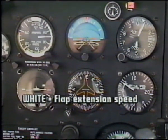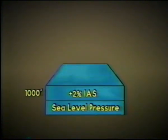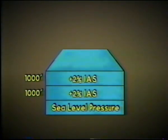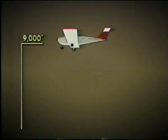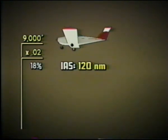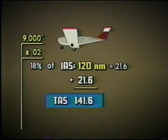Errors in airspeed readings may be caused by a variety of factors and will have to be corrected. As air density varies, so will the margin of error. The standard for calibrating this instrument is normal sea level pressure at 15 degrees Celsius. A good rule of thumb: for every 1,000 feet of pressure altitude, add 2% to the indicated airspeed. For example, you are flying at 9,000 feet with an indicated airspeed of 120 knots. Multiply 9,000 by 2%, which equals 18%. Take 18% of 120 knots, which equals 21.6. Then add this value to the indicated airspeed of 120 knots to arrive at the true airspeed of 141.6 knots.